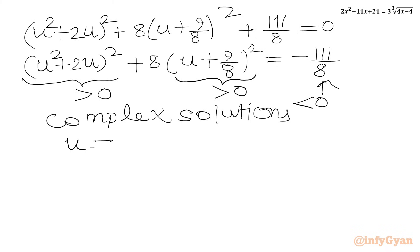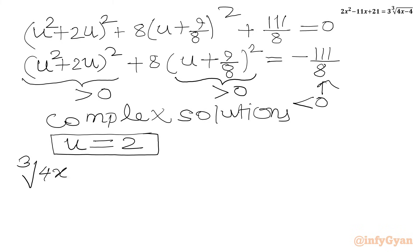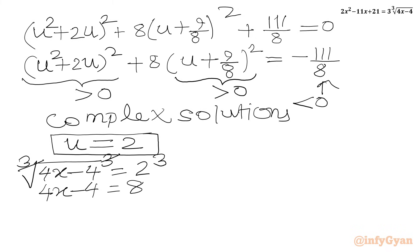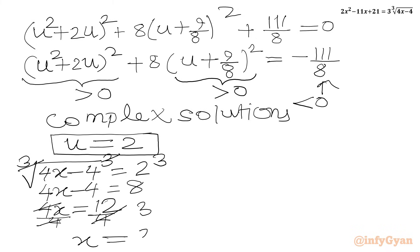We accept only u equal to 2. Since u was defined as cube root of 4x minus 4, we write cube root of 4x minus 4 equal to 2. Cubing both sides gives 4x minus 4 equal to 8. Adding 4 to both sides gives 4x equal to 12, and dividing by 4 gives x equal to 3. So x equal to 3 is the only real solution for our radical equation.